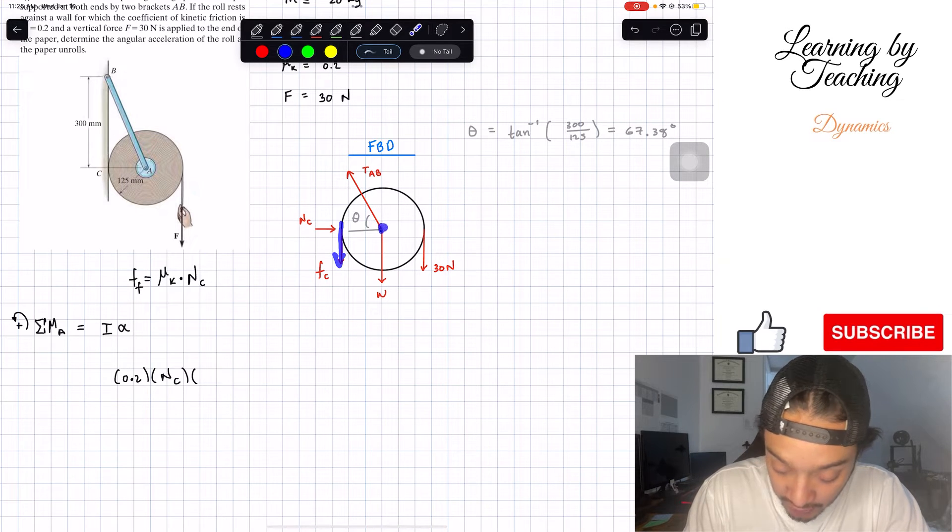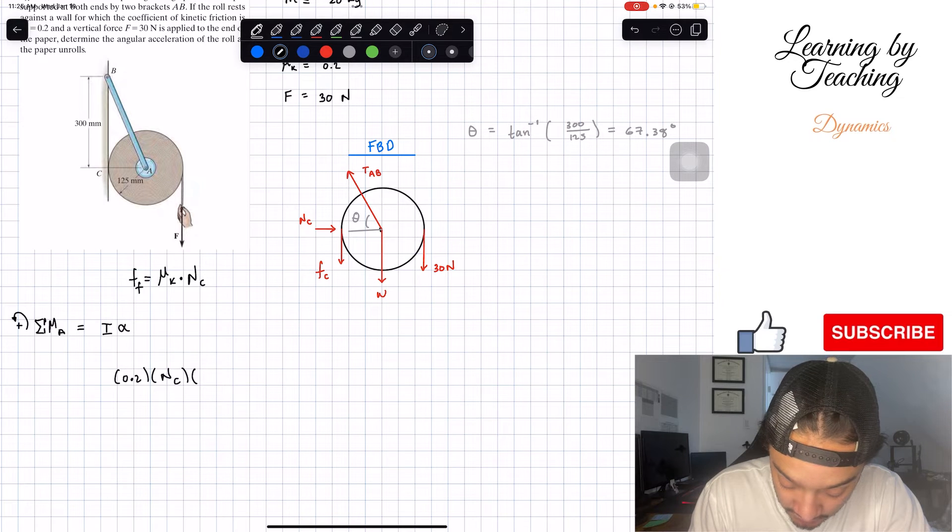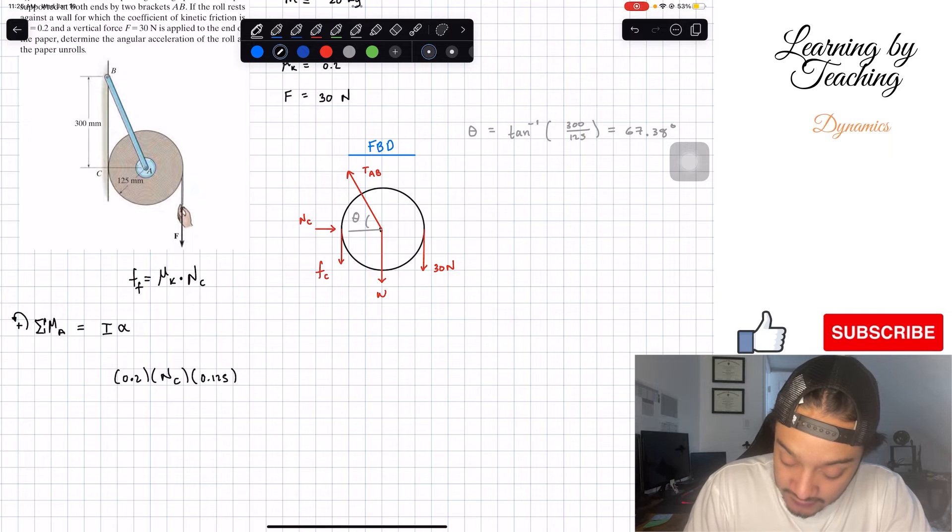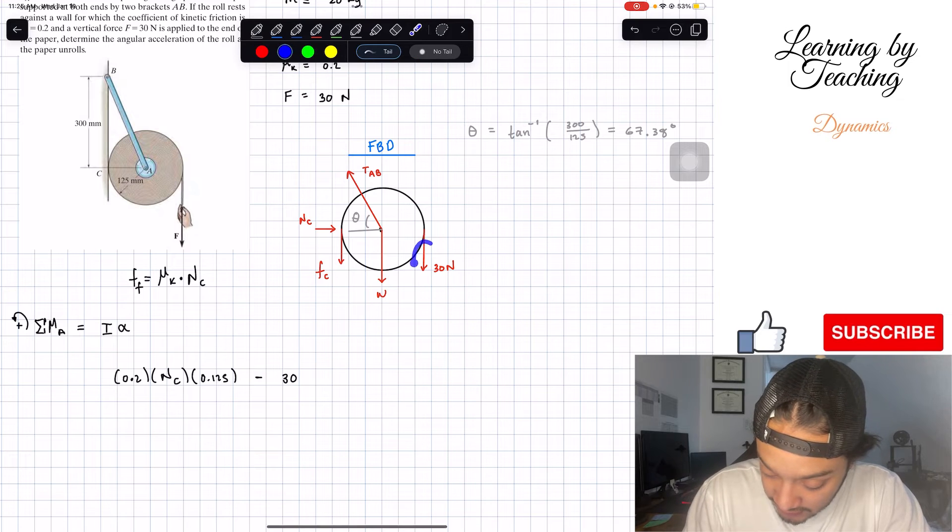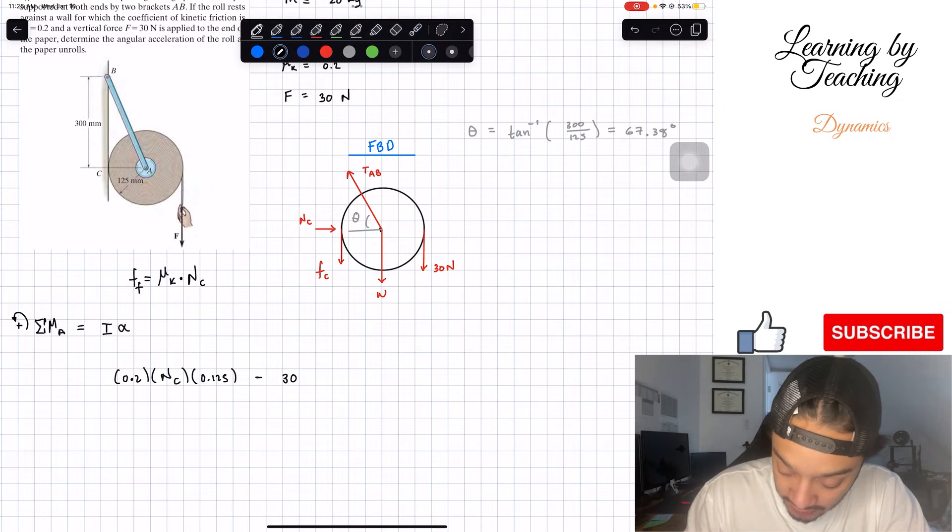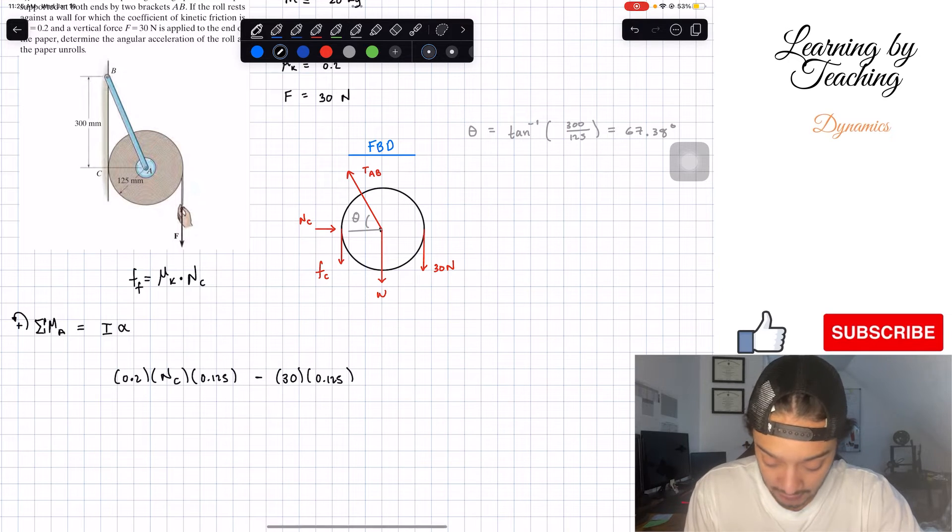What is the distance from this line of action to my point A? Our 125 millimeters. We're going to convert it into meters, so we got 0.125 meters. The direction is counterclockwise, so it's positive. Then we're going to have minus because this 30 newtons is going to create a clockwise direction. So negative 30 newtons multiplied by the same distance of 0.125, and all of this has to be equal to my moment of inertia.